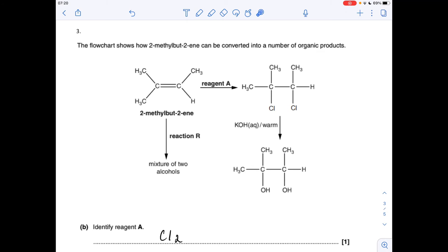Question 3, we've got another flowchart of reactions. We've got to identify reagent A, so look at what's happened. Double bonds opened up, and we've got Cl and Cl on each carbon. So reagent A is obviously chlorine.